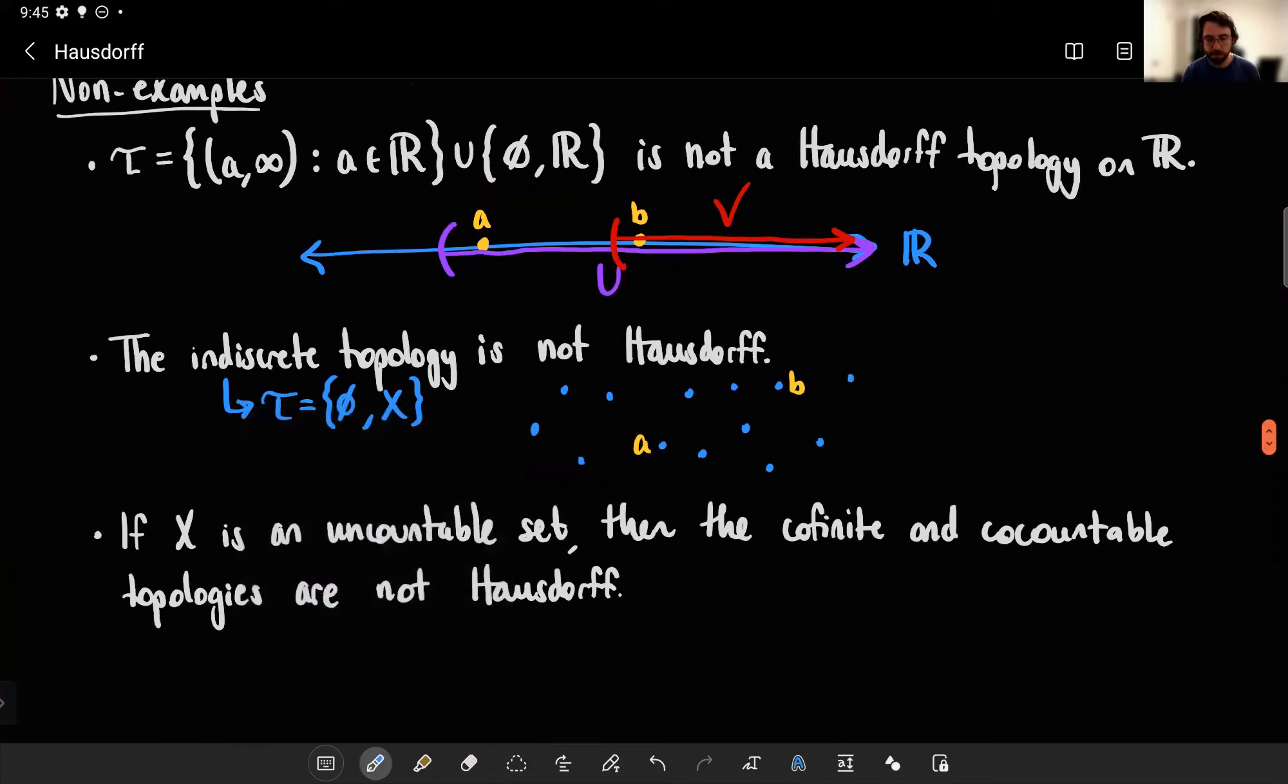Another slightly weird one. We don't get to use the co-finite and co-countable topologies for much except for counterexamples. So here we go. They're not Hausdorff. So given let's just make it easy on ourselves and say X is uncountable. Because otherwise, the co-finite and co-countable topologies might end up being the discrete topology and that would be Hausdorff. So let's play it safe and say it's an uncountable set. Then the co-finite topology says all the open sets are those sets with a finite complement.